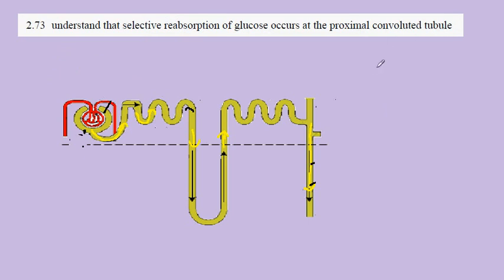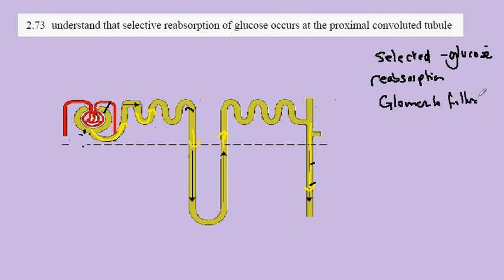Selective reabsorption means that a molecule is selected - in this case, glucose. Reabsorption refers to the idea that it will go from the glomerular filtrate and go back into the blood.